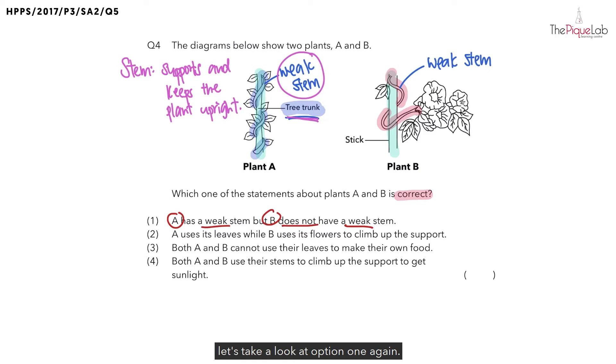So with all this understanding, let's take a look at option 1 again. Option 1 mentioned that A has a weak stem but B does not have a weak stem. Is this statement correct? This statement is incorrect. Why? This is because both plants A and B have a weak stem and not just plant A. That's why option 1 is incorrect.